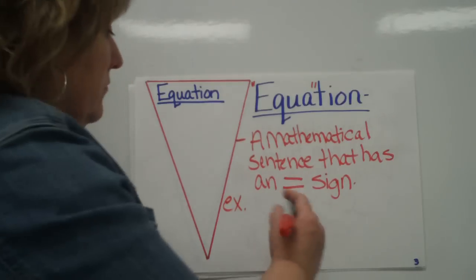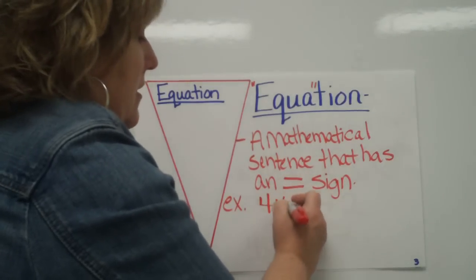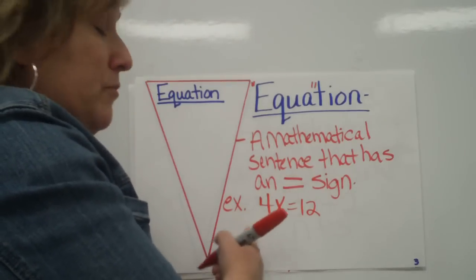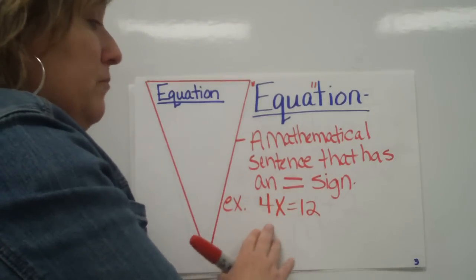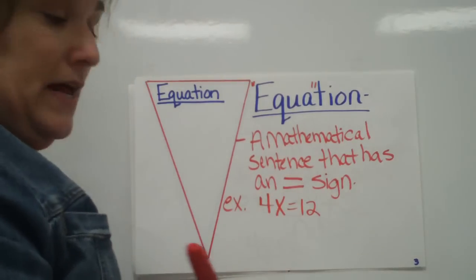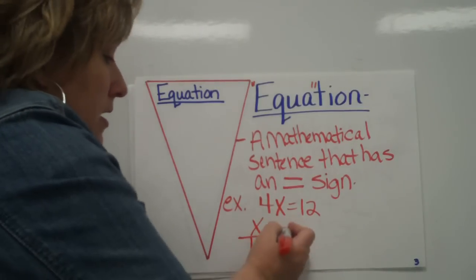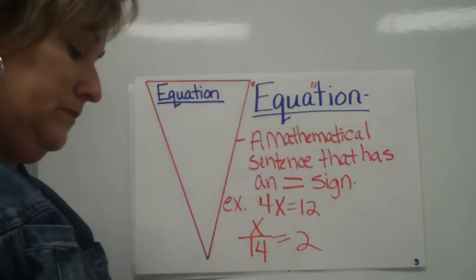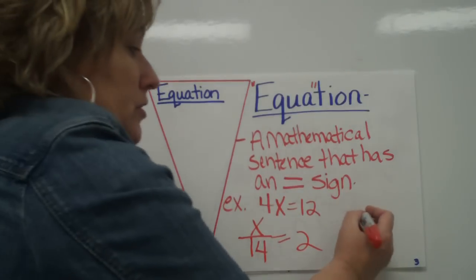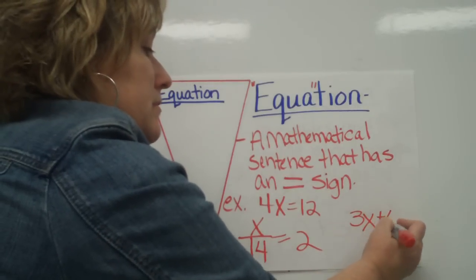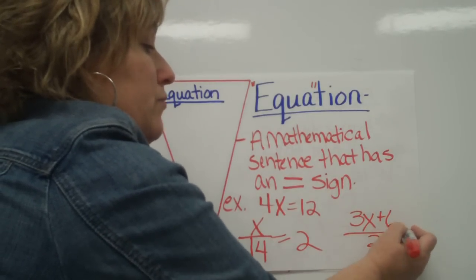Let me give you an example. 4x equals 12. This is what we call a number sentence - a combination of numbers and they equal something. Here's another example: x over 14 equals 2. You can also have 3x plus 6 over 2 equals 15. All of those are examples.